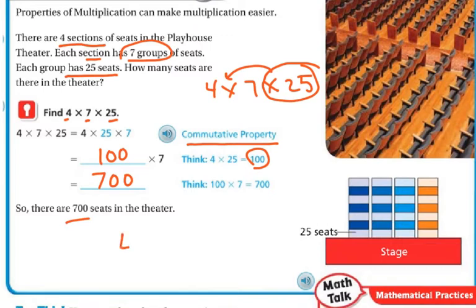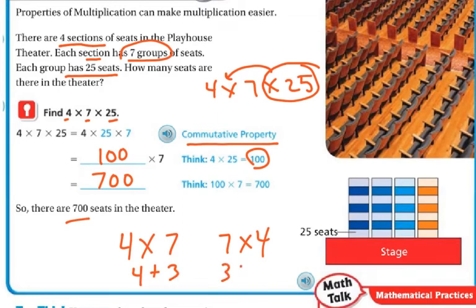With multiplication, 4 times 7 is the same thing as 7 times 4. It works the same way for addition — 4 plus 3 is the same thing as 3 plus 4. The commutative property does not work for division and subtraction, but it does work for multiplication and addition. So why not move the numbers around so you can do mental math with the easier numbers?